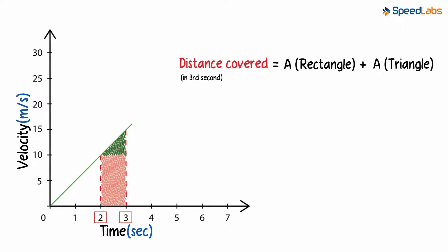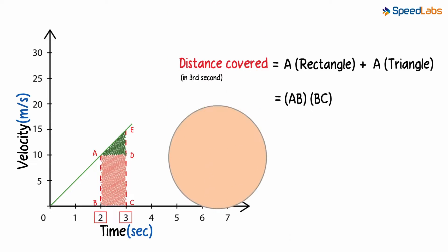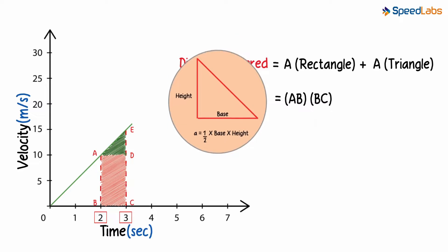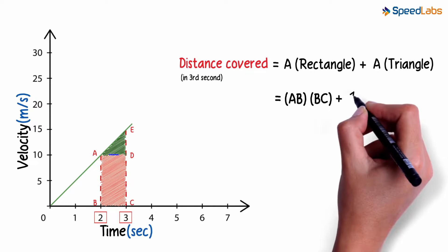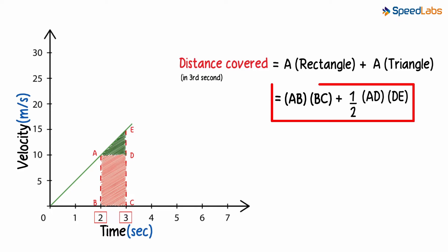Let's name the rectangle ABCD and let's call this point E. The area of the rectangle will be AB times BC. And do you remember the formula for the area of a triangle? Yes, it's half base times the height. The area of the triangle will be half AD times DE. Adding these two will give us the total area. Hence the total distance covered will equal AB times BC plus half AD times DE.